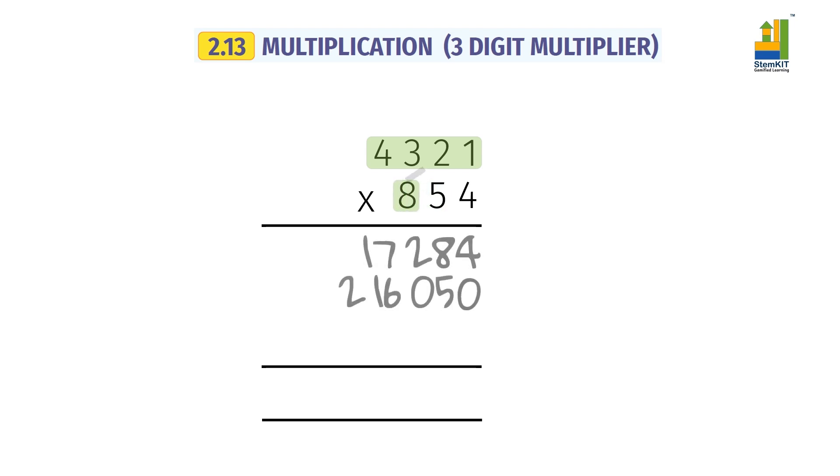Multiplying with hundreds digit of multiplier: Insert two 0s, 4,321 into 8 equals 34,568.